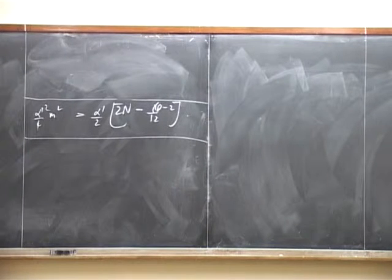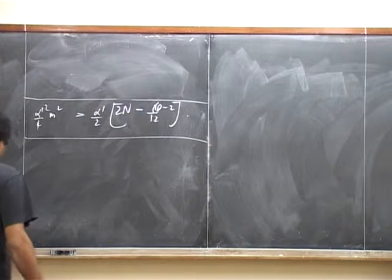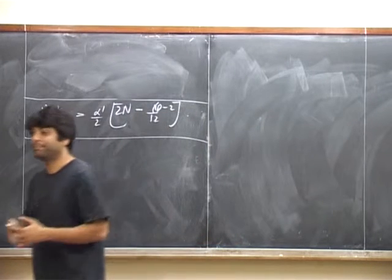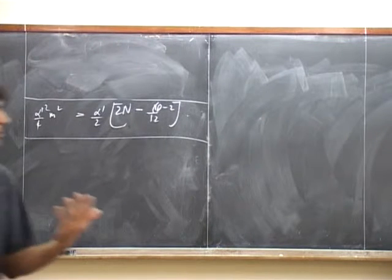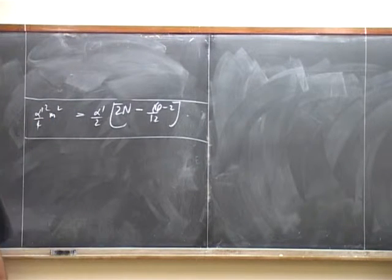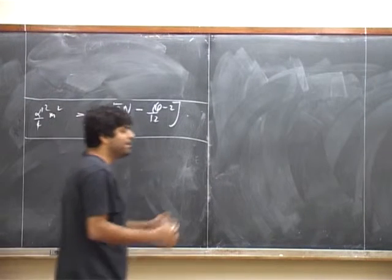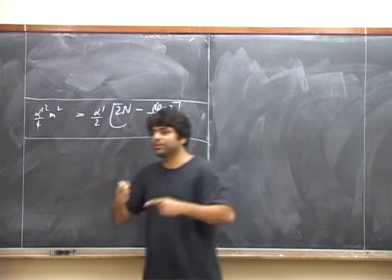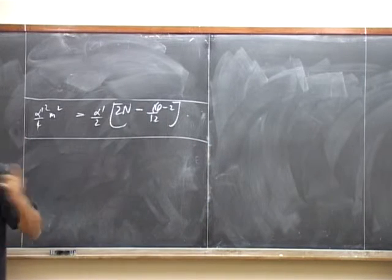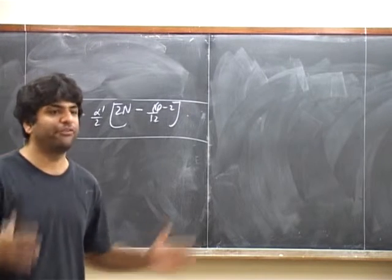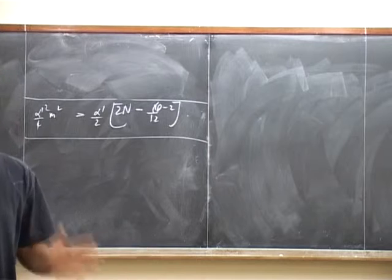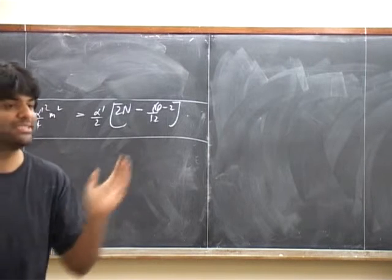This Hilbert space was too large, as we see from the fact that we have functions of d variables. The correct Hilbert space should have functions of d-1 variables. The fact that this Hilbert space was too large was told to us by a constraint that we had to impose on this quantum theory. The constraint took the form of operator equations obeyed on states.